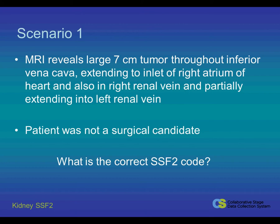In this scenario, we have a patient with a renal cell carcinoma of the right kidney diagnosed on MRI. The patient has a large 7 cm tumor throughout the inferior vena cava. The tumor extends to the inlet of the right atrium of the heart and into the right renal vein. It also partially extends into the left renal vein. No surgery was performed as the patient was not a surgical candidate. For this scenario, what is the correct code for CS Factor 2?